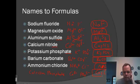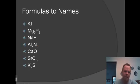So that's going name to formula. Now let's go formula to name. KI: K is potassium, I is iodine, so we change the ending to IDE. So potassium iodide. Mg3P2: Mg is magnesium, this is phosphorus, I'm going to change phosphorus to phosphide. Magnesium phosphide.